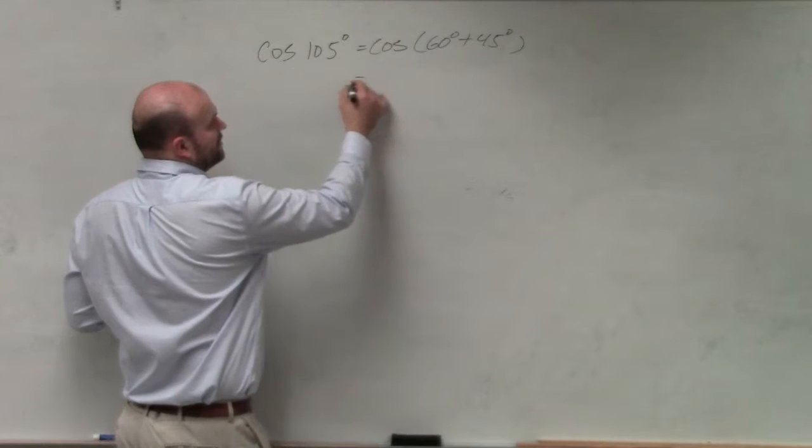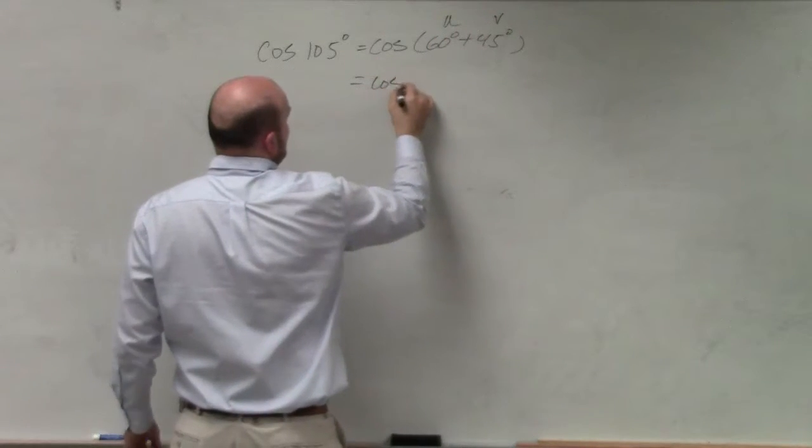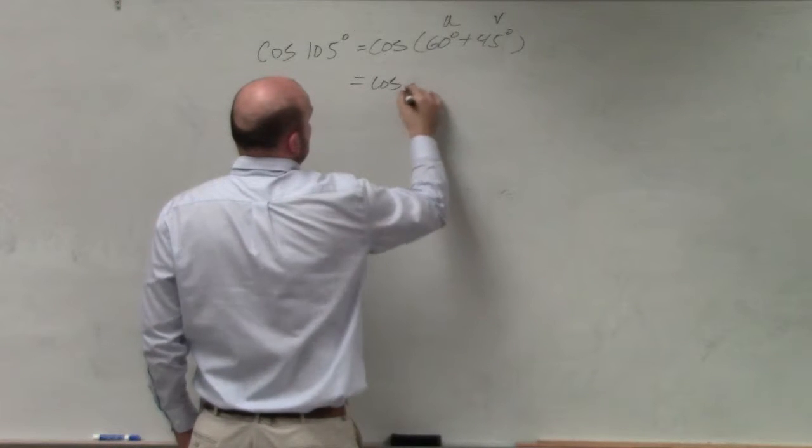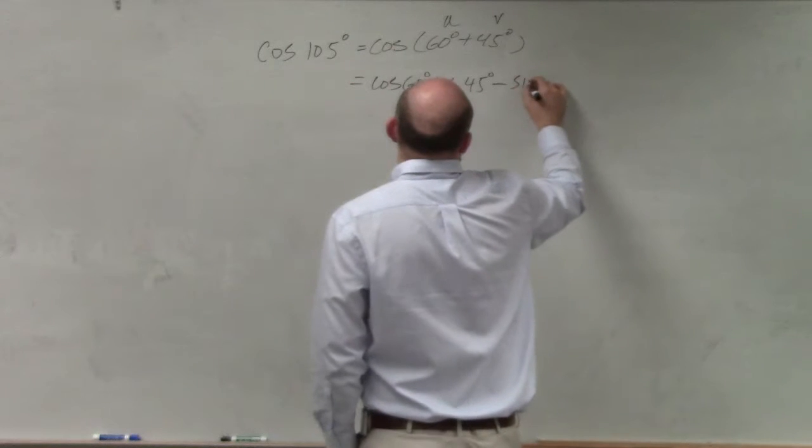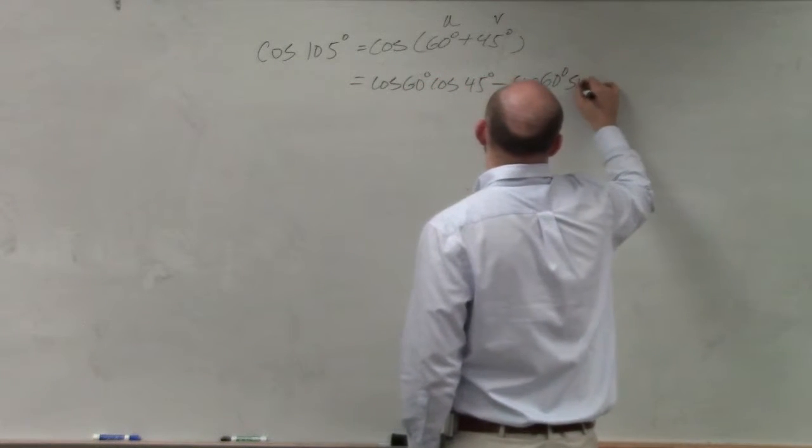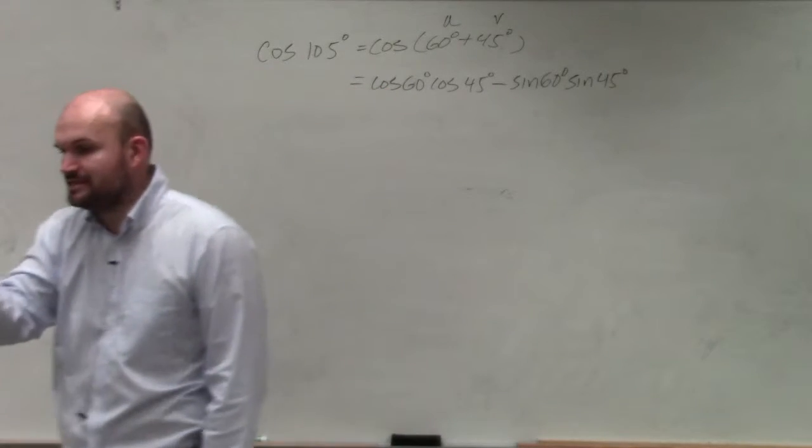So then using the formula for cosine, I'll say this is my u and that's my v. So using the formula, I have cosine of 60 degrees cosine of 45 degrees minus sine of 60 degrees times the sine of 45 degrees. That's based on the formula that's on your sheet.